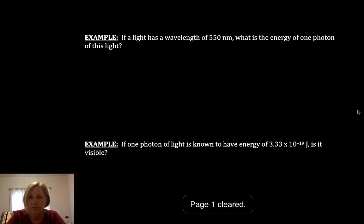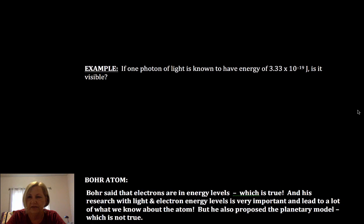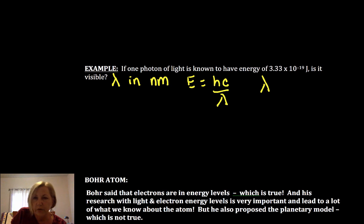And then finally one more. I know this has been fast and furious, but you can always slow down and rewind, which is one of the advantages of a video. This time I have my energy and I want to know if it's visible. To find out if it's visible, you have to solve for lambda in nanometers. So I'm going to use energy is HC over lambda. I'm going to rearrange that. I'm going to cross multiply. So I have lambda is equal to HC over my energy.